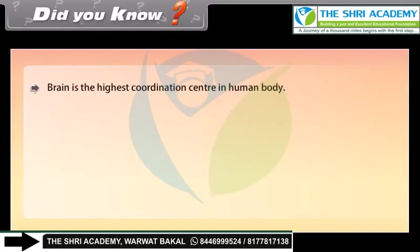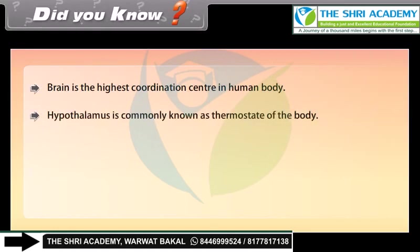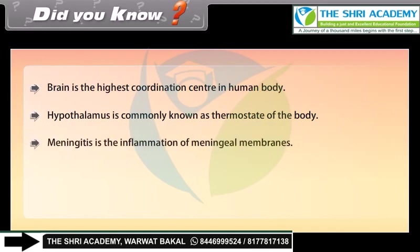Did you know? The brain is the highest coordination center in the human body. The hypothalamus is commonly known as the thermostat of the body. Meningitis is the inflammation of meningeal membranes. The cerebellum is also known as the little brain.